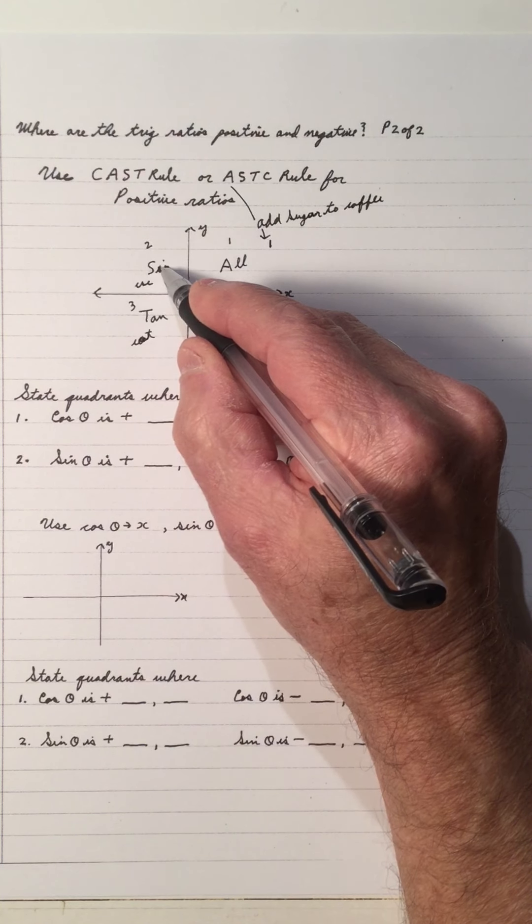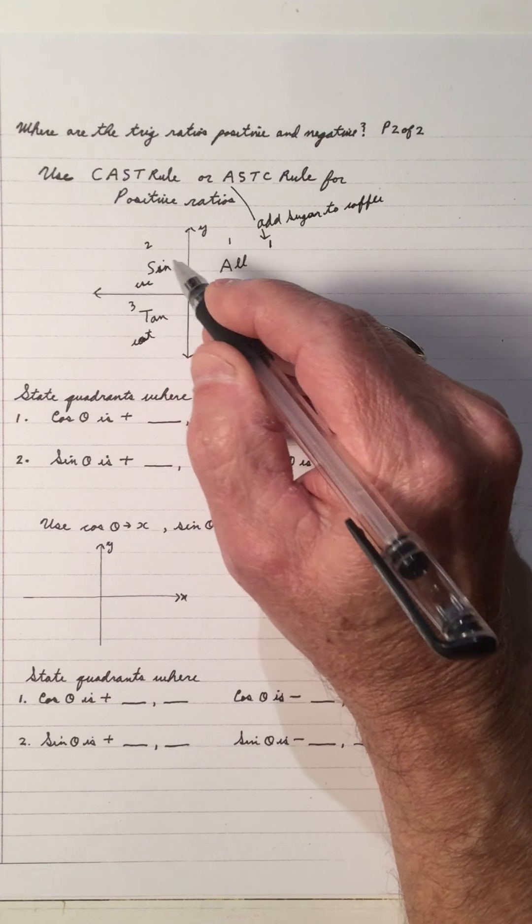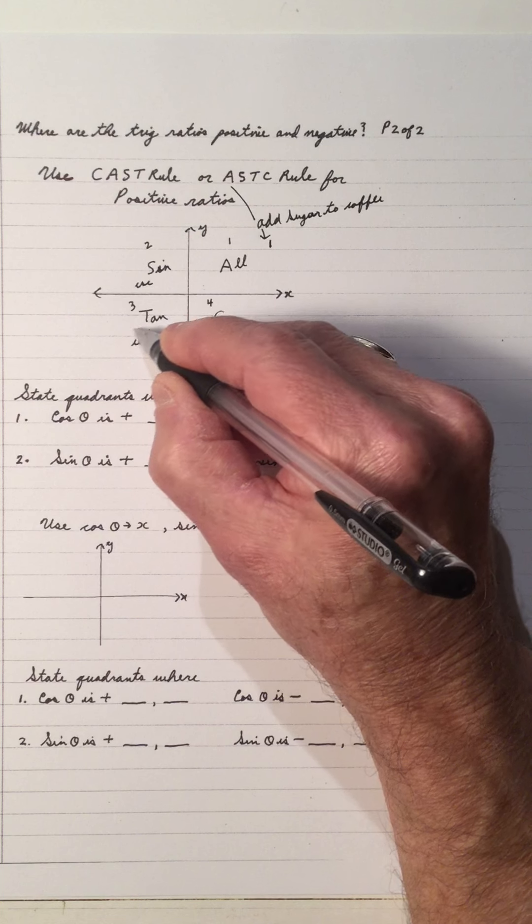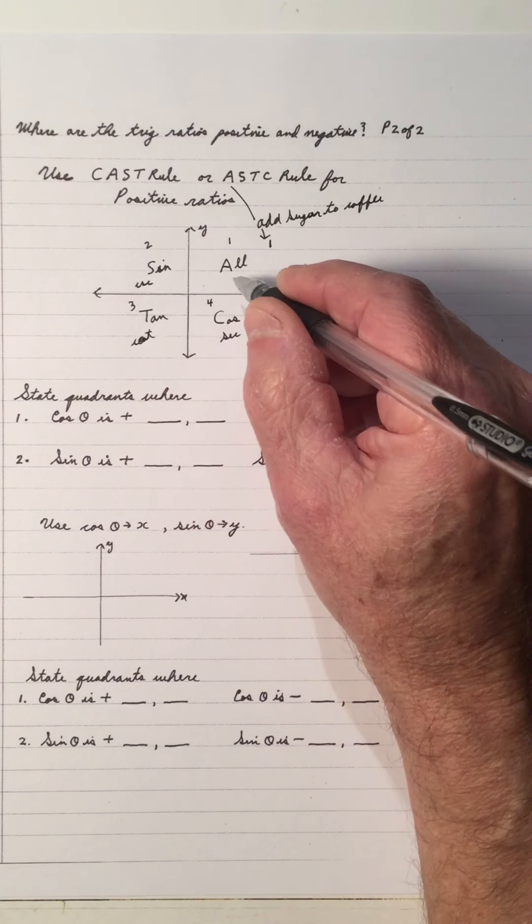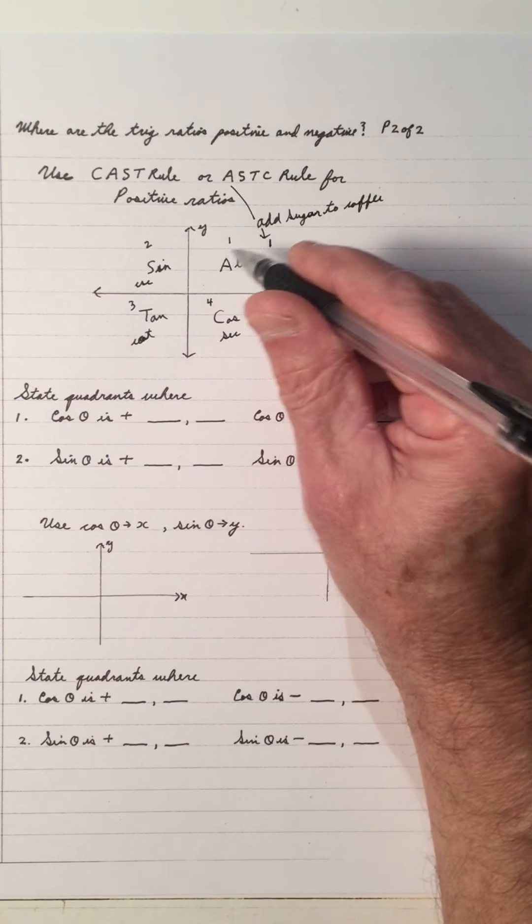Review: sine is positive, that means the other two, cos and tan, are negative. If tan is positive, that means the other two, cos and sine, are negative. Once you decide what's positive, then the other quadrants will be negative.